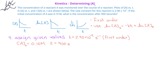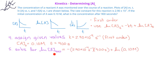Now that we've assigned the given values, we can solve for the natural log of the concentration of A at 900 seconds. We plug in the values, and we get: the natural log of A at 900 seconds is equal to negative 2.90 times 10 to the negative fourth seconds to the minus one, times 900 seconds, plus the natural log of 0.10. When we multiply the rate constant and the time, we get negative 0.261. When we take the natural log of the initial concentration, we get negative 2.303. When we add those two values together, we find that the natural log of the concentration of A at 900 seconds is negative 2.564.